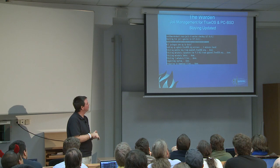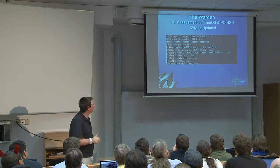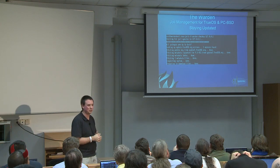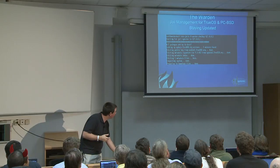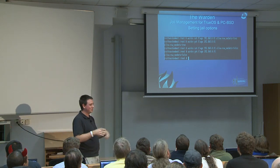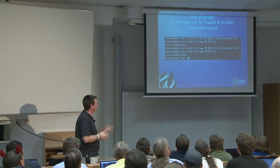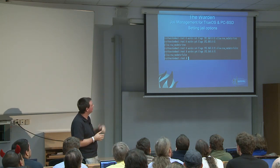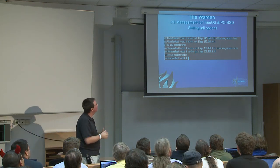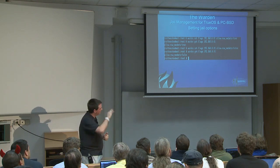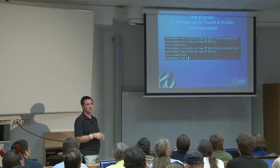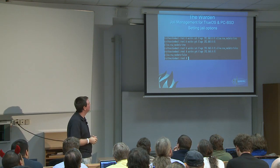Updates — we can say 'warden update' to check for updates to a jail. It's going to go ahead and run freebsd-update on it to make sure everything's up to snuff inside the jail, and give you the commands to do the freebsd-update when that's done. Flags: you can set cool jail options like raw sockets if you're running Postgres or something. We can get the flags for the jail and set them with 'warden set flags' and a comma-delimited list of whatever flags you want for that jail.